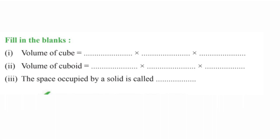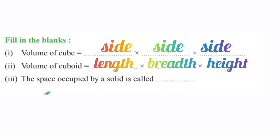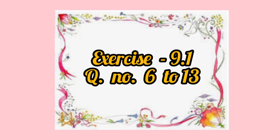Our next question: what is the volume of a cube? Volume of a cube equals side into side into side. Next question: what is the volume of a cuboid? Volume of a cuboid equals length into breadth into height. The space occupied by a solid is called its volume. Today's homework: do question number 6 to 13 of exercise 9.1 in your notebooks. Thank you. Have a nice day.